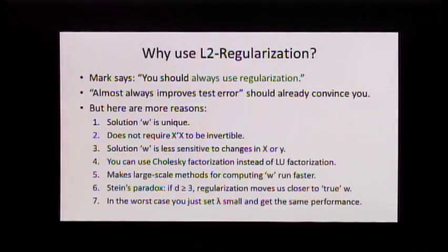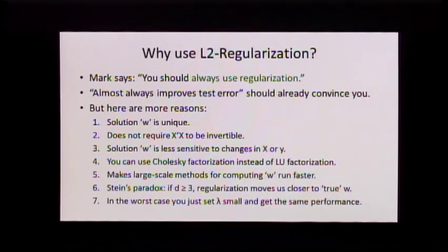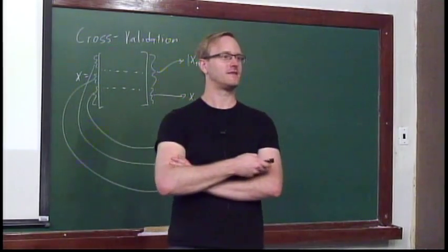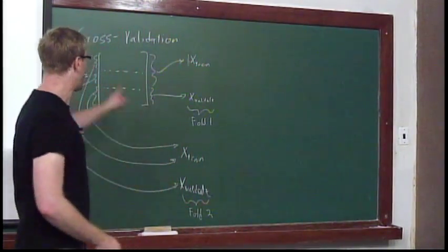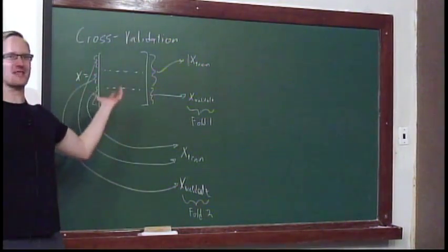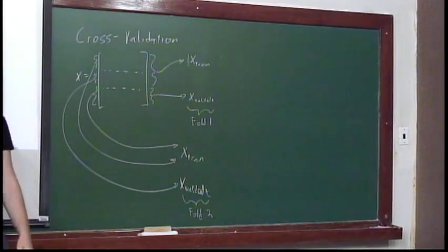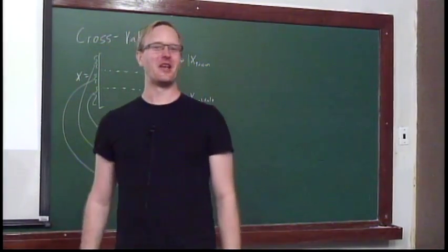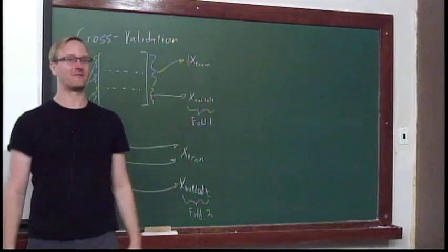Are there any comments on regularization before I move on? The L2 norm is not always the right choice, but it's computationally convenient. Is there a problem if lambda is chosen too large? Yes — if lambda is too large, your training error and test error are going to be almost the same, but your training error might be very high, so it's no good because you want the error to be low. Cross-validation is sort of my answer to everything: you want some approximation of how well this affects test error, so you always go to cross-validation or a validation set to choose things like lambda.